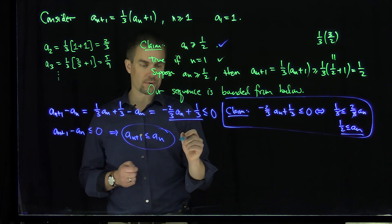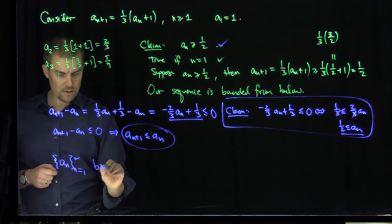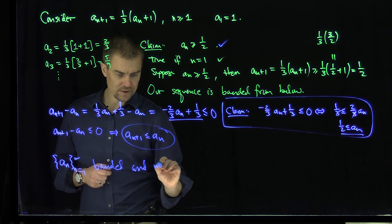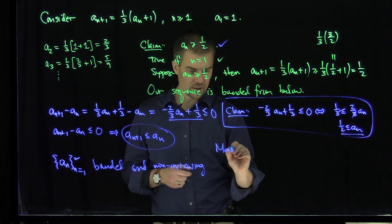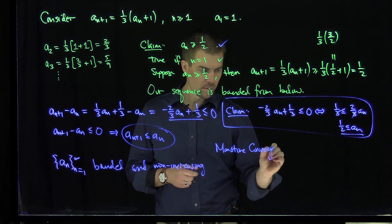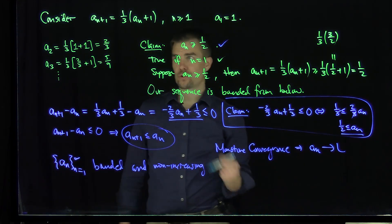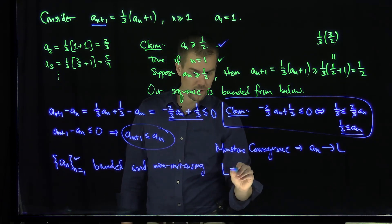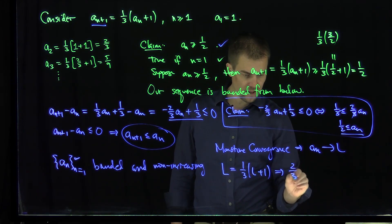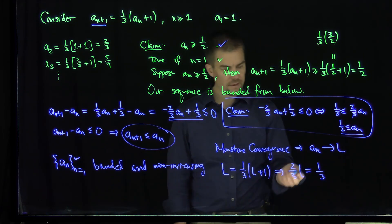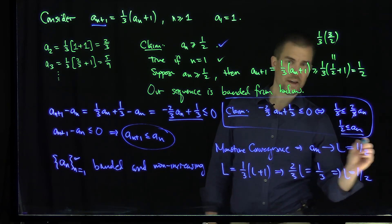So our sequence {a_n} from n = 1 to infinity is bounded and non-increasing. The monotone convergence theorem then implies that a_n converges to some limit L. Using the recursive relation, the left-hand side converges to L and the right-hand side converges to one-third L plus one-third. By subtraction, two-thirds L equals one-third, and therefore L equals one-half. So our recursively defined sequence converges to one-half.